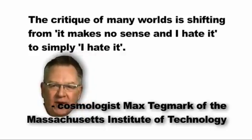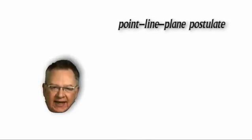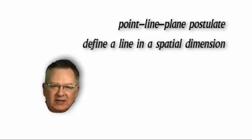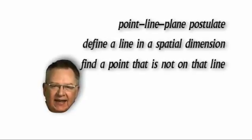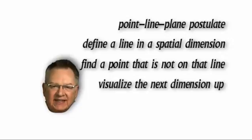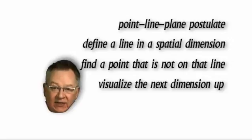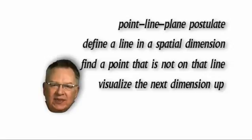Here's the intuitive leap my project takes on all this. If there are multiple branching timeline versions of our universe being created by chance, choice, and the actions of others, and yet we somehow can't get to those other universes once a certain outcome has been observed, we are talking about the point-line-plane postulate again. We define a line in a spatial dimension, and we find a point that is not on that line, and that's how we visualize the next dimension up. In other words, with my project, I'm contending that the versions of our universe that we can't get to are being defined within additional dimensions, and this aligns with the most basic definition of spatial dimensions.